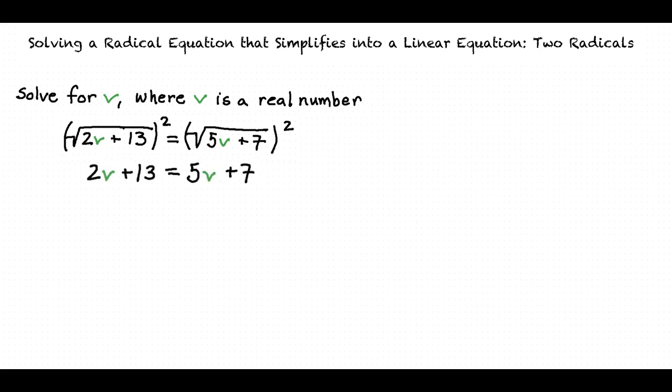Now that there are no radicals in this equation, we can use algebraic manipulation to solve for v. We want to make sure that all the values containing v are on the same side of the equation. We can do so by subtracting 5v from both sides.